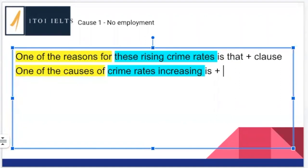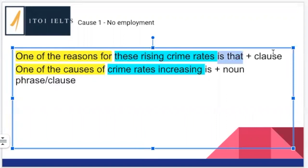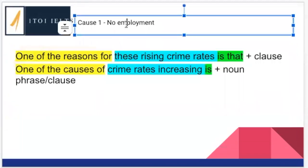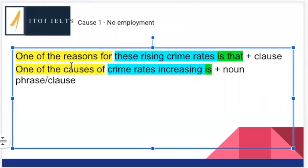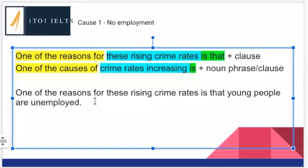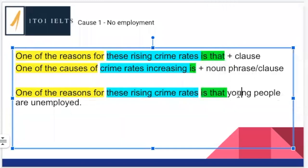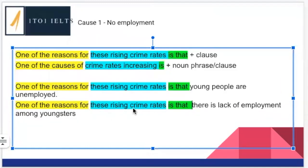Now let's look at student examples. Using the idea of no employment, Nabila wrote: 'One of the reasons for rising crime rates is that young people are unemployed.' The structure is grammatically correct. However, looking at another version — 'One of the reasons for these rising crime rates is that there is a lack of employment amongst youngsters' — there is a vocabulary problem. 'Youngsters' is an incredibly informal word and must never be used in your writing. Additionally, 'youngsters' typically refers to young children, not young adults, which is what this question is about.